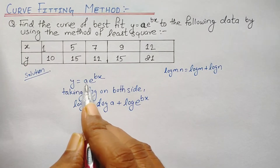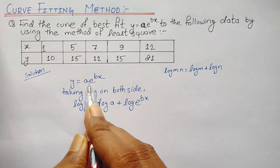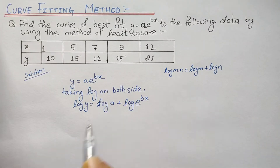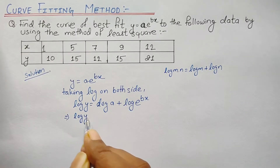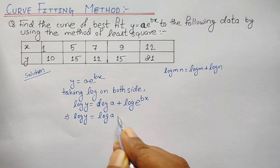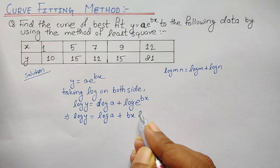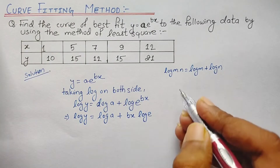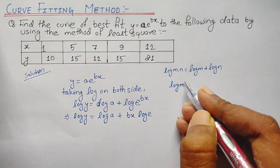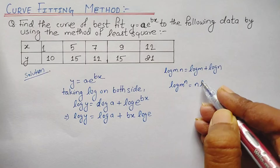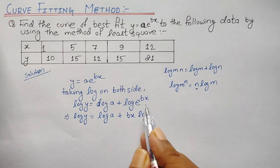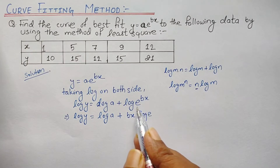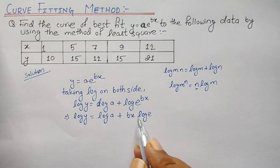Here y equals a times e to the power bx is in product form, so we split it using the law of indices. Then applying the second law — log m to the power n equals n log m — the power bx is brought in front: log y equals log a plus bx log e. So bx, which was the power of the exponential, is now in front of log e.